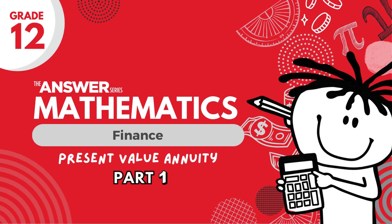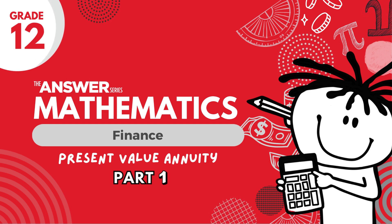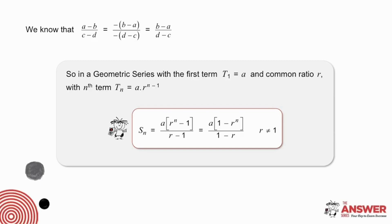But first, we need to check our algebraic manipulation skills. Let's have a look at the fraction a minus b over c minus d. If we were to take negative one out of the numerator, we would get negative bracket b minus a. And if we were to do the same in the denominator, we would get negative bracket d minus c.